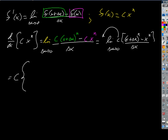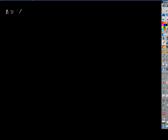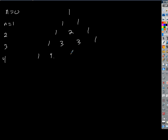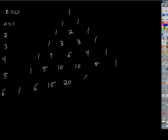So let's write down the coefficients. n equals 0 is just 1. n equals 1: those are our coefficients. n equals 2. n equals 3. Let's do a few so we can really see a pattern. n equals 4: 1, 4, 6, 4, 1. n equals 5: 1, 5, 10, 10, 5, 1. Let's do one more — n equals 6: 1, 6, 15, 20, 15, 6, 1.